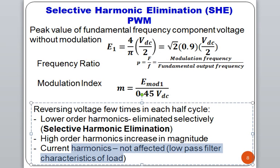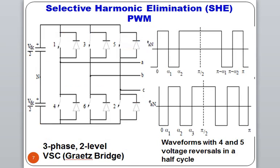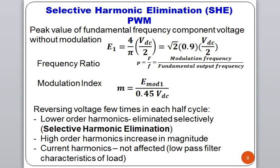In this technique, we have two waveforms. The first waveform depicts four voltage reversals — first, second, third, and fourth — in one half cycle. The second waveform gives five voltage reversals in one half cycle. As many times as you reverse the voltage in each half cycle, the lower order harmonics get eliminated. High order harmonics increase, but their magnitude effect is less.